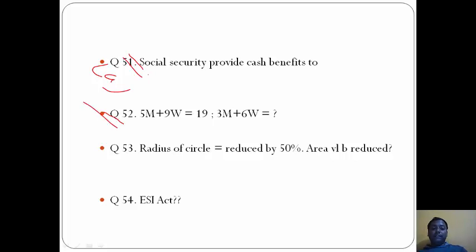Question 52 is also doubtful, I don't think this is correct. Question 53: Radius of circle is reduced by 50 percent, what will be the area reduced by? Answer here will be D, 75 percent. Suppose in the first case it's r, in the second case it becomes 0.5r.